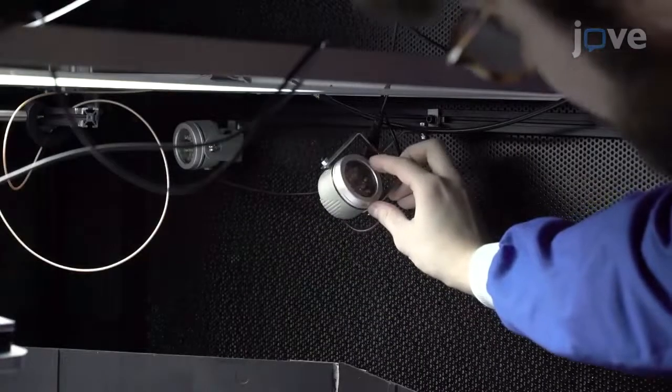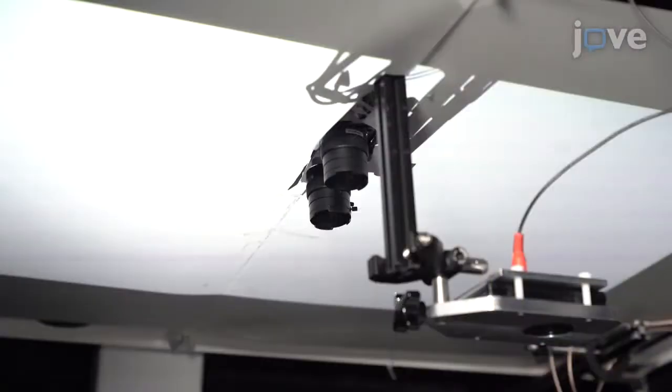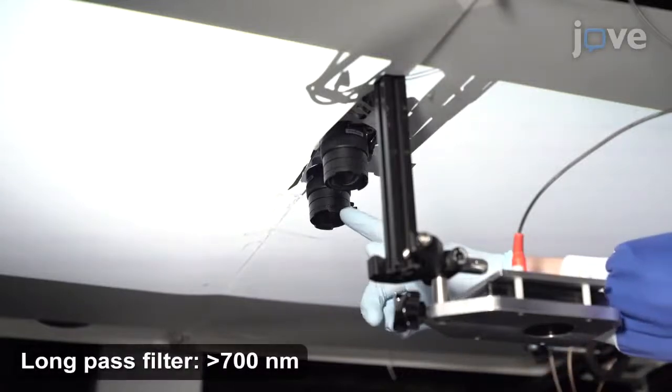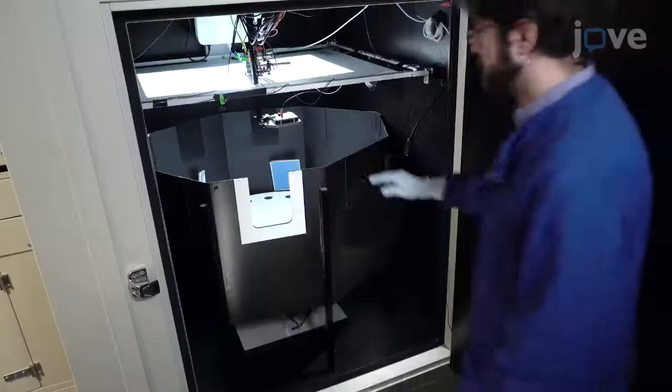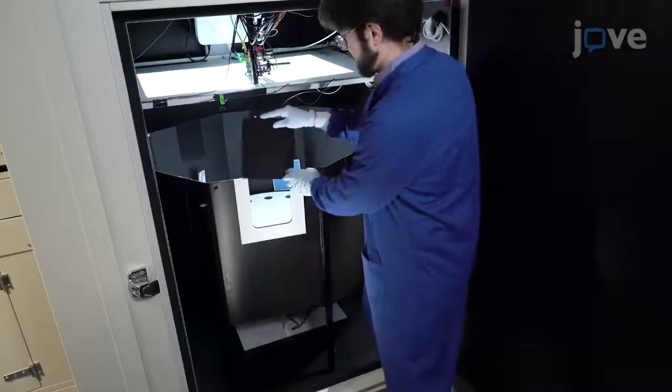Place infrared lights and an infrared camera with a long pass filter above the platform to prevent projector flicker in the acquired video. Then place the behavioral apparatus inside a sound and light proof box to prevent external cues from affecting the experiment.